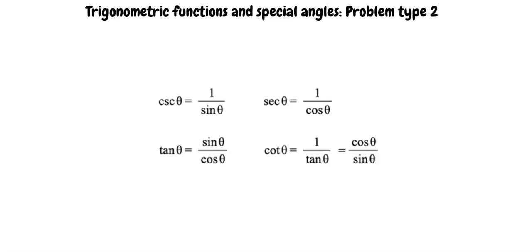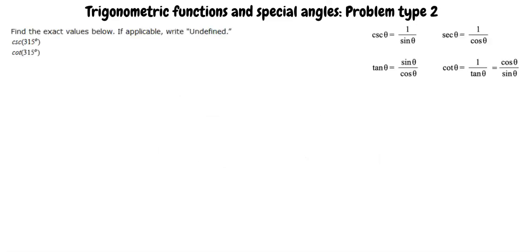Let's start with an example. We are asked to find the exact values. First, we should recognize that cosecant of theta equals 1 over sine theta.